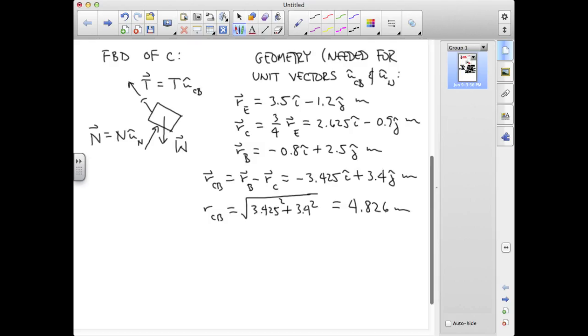My unit vector from C to B, then, is the relative position vector divided by its own magnitude, and that's minus 0.7097 in I plus 0.7045 in J.